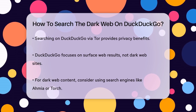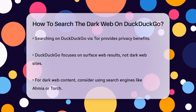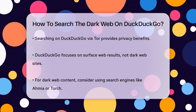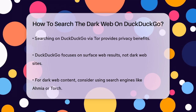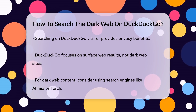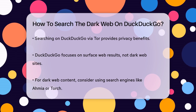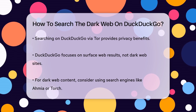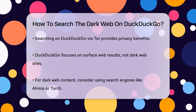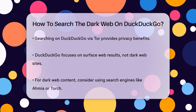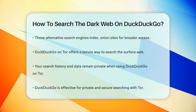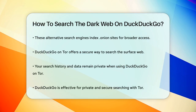It focuses on providing safe, unbiased results from the Surface Web. If you're looking for dark web content, you might want to consider other search engines specifically designed for the dark web, such as AMIA or Torch. These engines index .onion sites and can provide access to a wider range of dark web content.